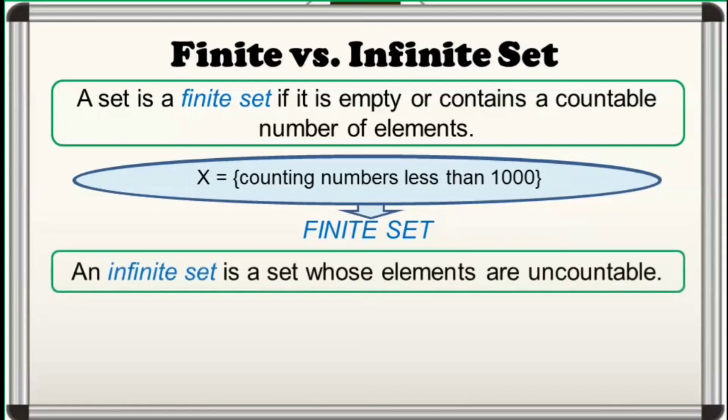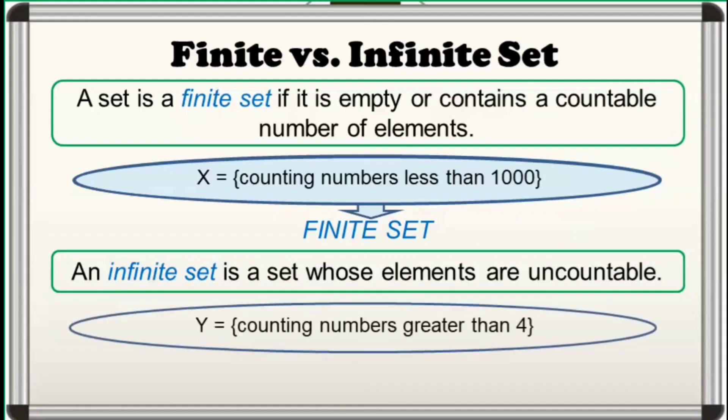Otherwise, a set is said to be infinite if we cannot count its number of elements. For example, set Y is the set of counting numbers greater than 4. We cannot count the number of elements set Y has since there are a lot of numbers greater than 4. Hence, set Y is an infinite set.